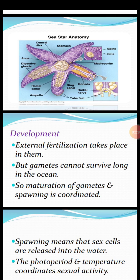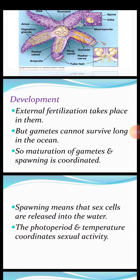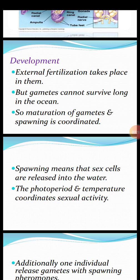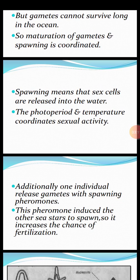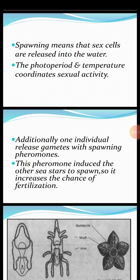The third process is development. External fertilization occurs outside the body and takes place in sea stars. Gametes — sex cells — cannot survive long in the ocean, so maturation of gametes and spawning are coordinated. Spawning means sex cells are released into the water. Photoperiod, that is light and temperature, coordinates sexual activity in sea stars. Additionally, one individual releases gametes with spawning chemicals or pheromones, which induce other sea stars to spawn, increasing the chance of fertilization.